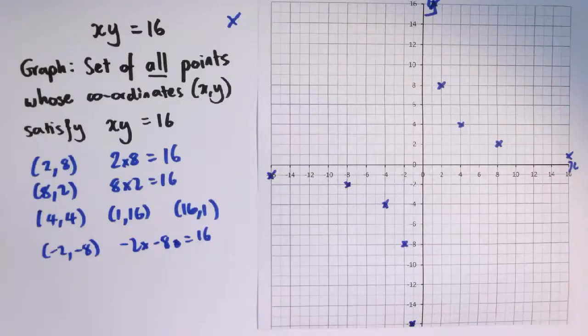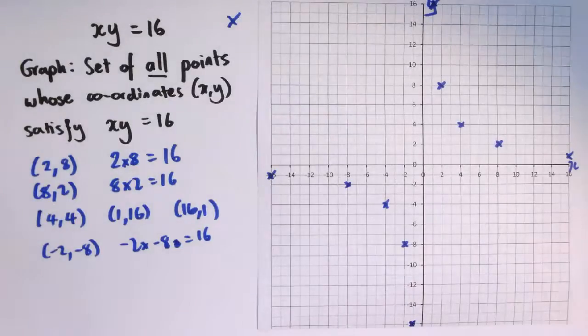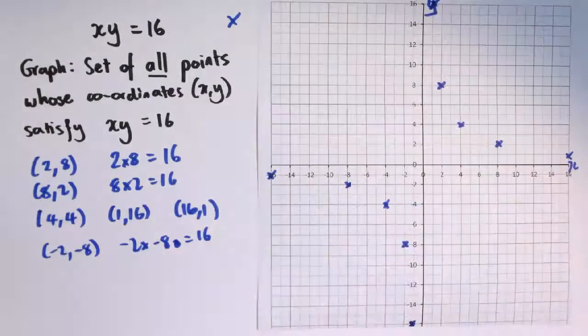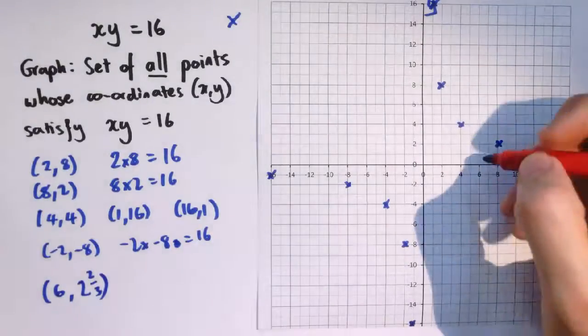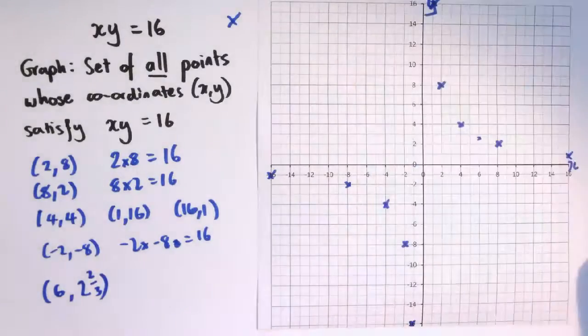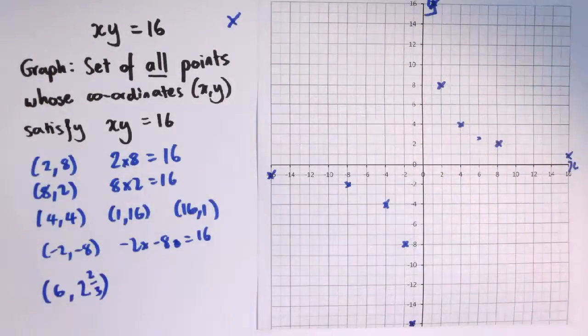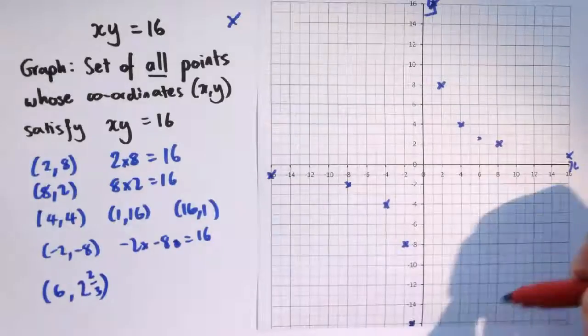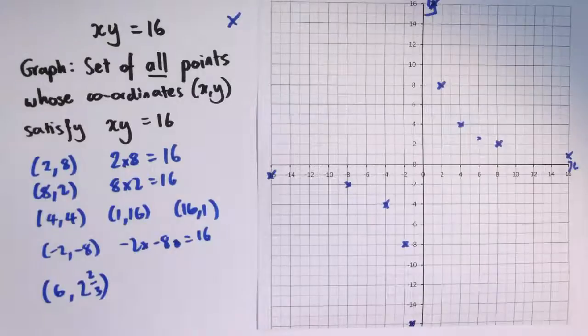And now we're pretty much done with whole number solutions that work. So is this the graph? Well, not quite. Because it's the set of all points whose coordinates satisfy this. And although these are all the ones with whole numbers that work, actually we could find others like (6, 2 and 2 thirds). So actually there's all these points in between the other points that also work. So let me fill in the rest of this.